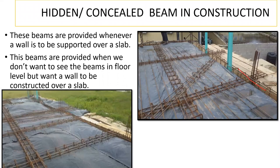At floor level, a hidden beam will not be visible because it is cast along with the slab and filled with concrete, so it's not visible. Whereas a normal primary beam is visible at floor level when you look at it.